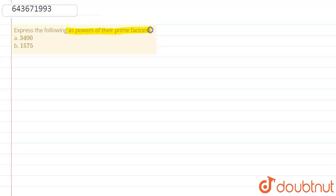Hello friends, here the question is express the following as a power of their prime factors: a) 3400 and b) 1575. So let us start the solution.